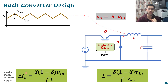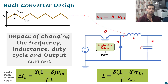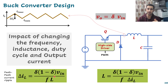I will stop here, but in the next video we are going to understand how the inductor current is impacted by changing the frequency, inductance, duty cycle, or output current. We will look at delta-IL as a main factor, since delta-V_C follows delta-IL as well. This will give us knowledge about how to select parameters to get a higher quality buck converter. See you next video, thank you very much.